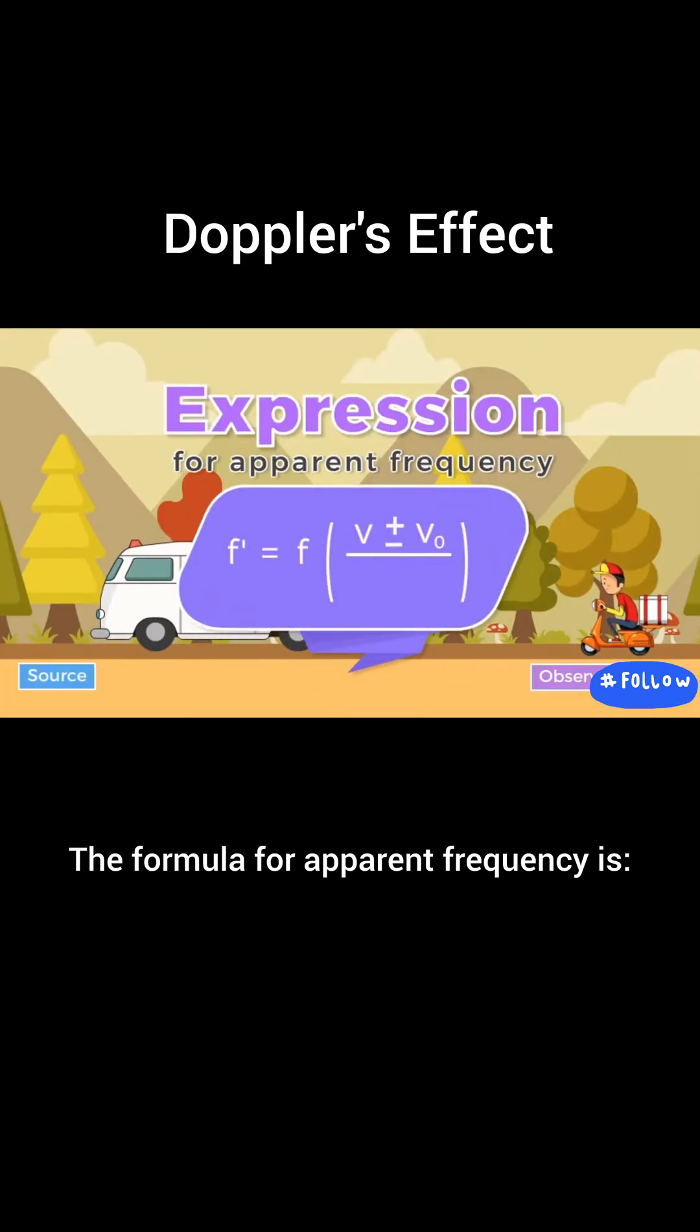The formula for apparent frequency is f times (v plus or minus vo) over (v plus or minus vs), where vo is the observer's speed, vs is the source's speed, and v is the speed of sound in still air.